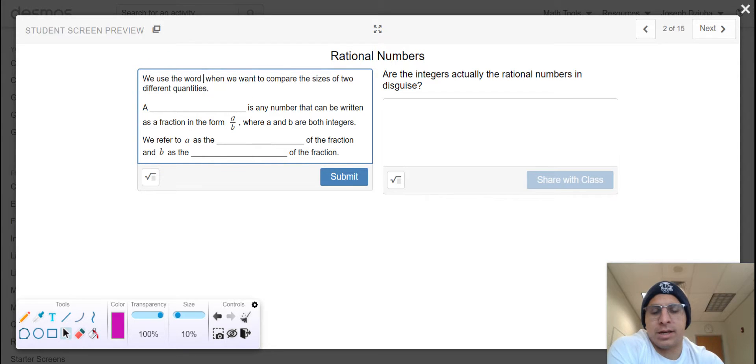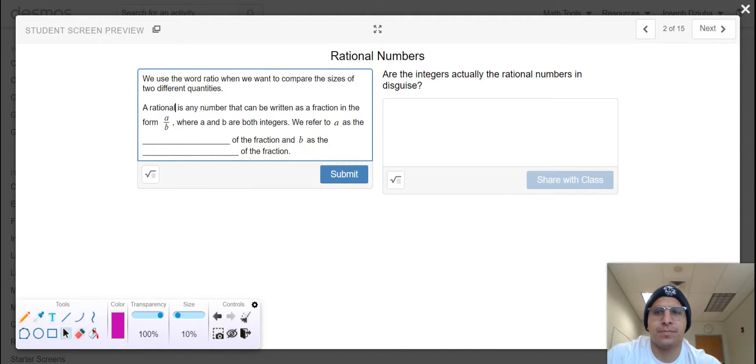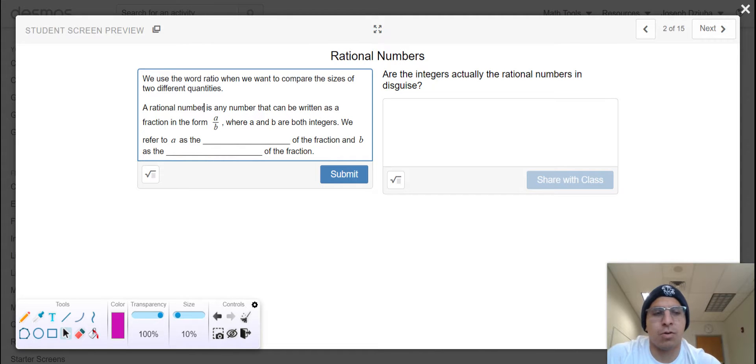So back in your heyday when you were like four foot one, we lad, you're still four foot one, no worries. I'm like five foot five and everyone calls me short but great things come in small packages. We use the word ratio when we want to compare the sizes of two different quantities. I know you might have grown up calling them fractions, I'll definitely refer to them as rational numbers, but a rational number is any number that can be written as a fraction in the form of a divided by b where a and b are both integers. Refer to a as the numerator of the fraction and b as the denominator of the fraction.